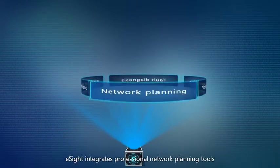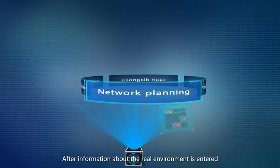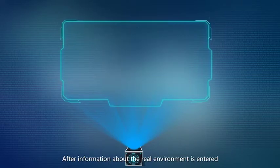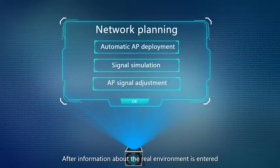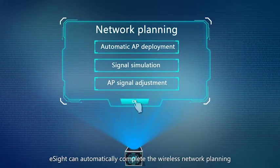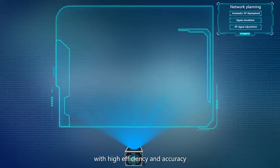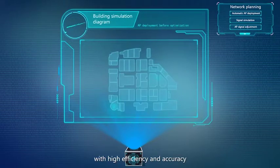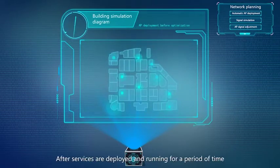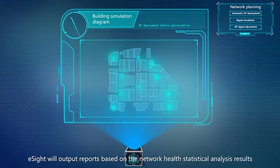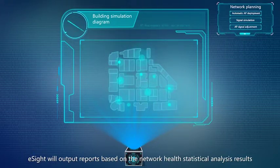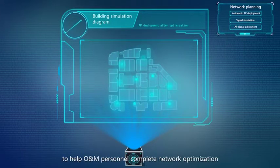E-Site integrates professional network planning tools. After information about the real environment is entered, E-Site can automatically complete the wireless network planning with high efficiency and accuracy. After services are deployed and running for a period of time, E-Site will output reports based on network health statistical analysis results to help O&M personnel complete network optimization.